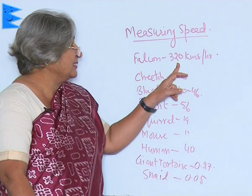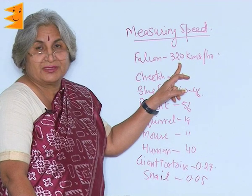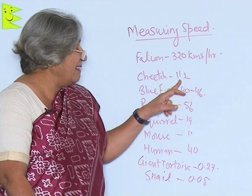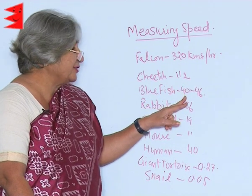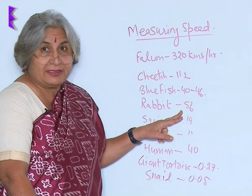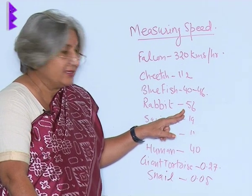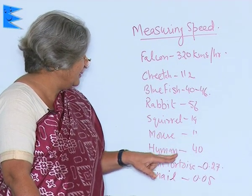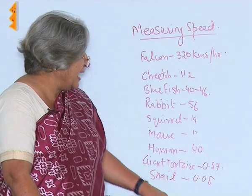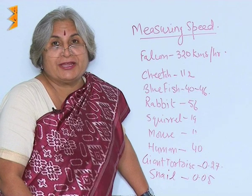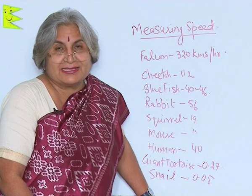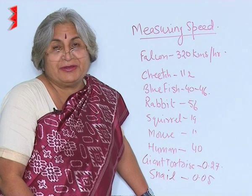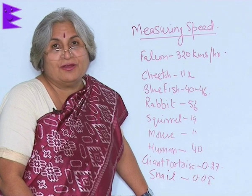In the case of a falcon it is 320 kilometers per hour. The cheetah is considered to be the fastest terrestrial animal at 112 kilometers per hour. Bluefish 40 to 46, rabbit 56 kilometers per hour, squirrel 19, domestic mouse 11, human beings 40, giant tortoise only 0.27, and a snail 0.05. From here you can understand the relative speed of all these things.